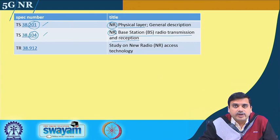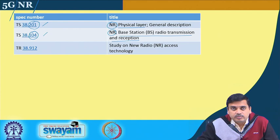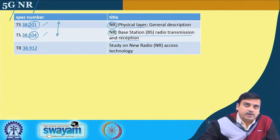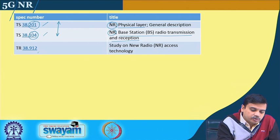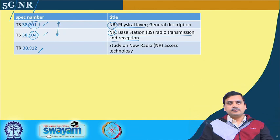Document 38.104 pertains to NR base station radio transmission and reception. There are many other documents required to complete the description of NR, and it is not possible to cover all of them in this course. Our main aim is to look at the fundamental technologies, how things work and what details make them run. These documents provide bit-exact specifications. If one has to design equipment meeting ITU or 3GPP specifications, one must follow the entire range of documents describing the complete protocol structure. We will primarily look at 38.211 and 38.104 to establish the physical NR.